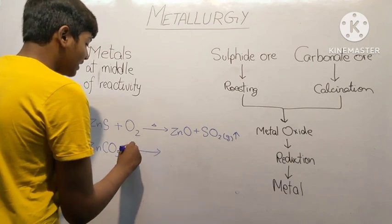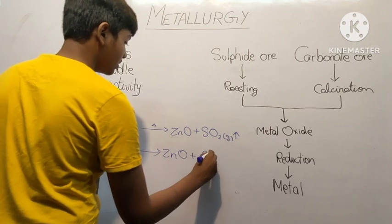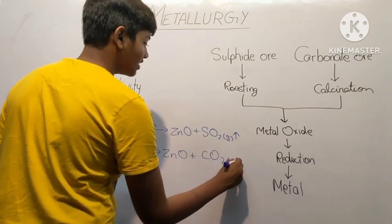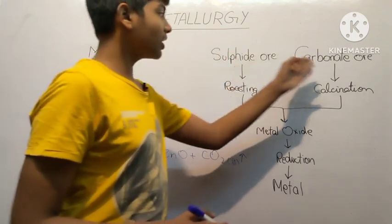In the absence of air, that is without the presence of oxygen, we get ZnO plus CO2, which is also a gas that is evolved. So now why do we need to convert the sulfide ore and carbonate ore to metal oxide before reduction?